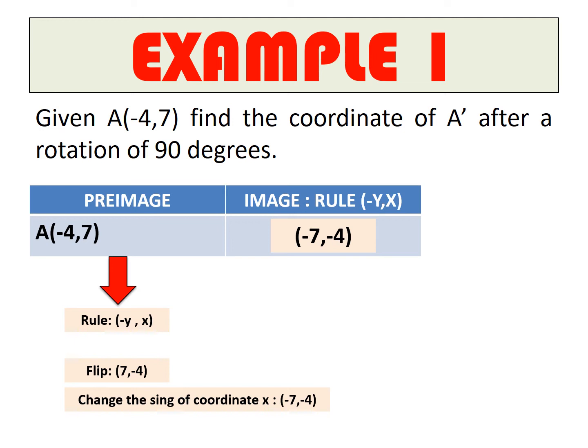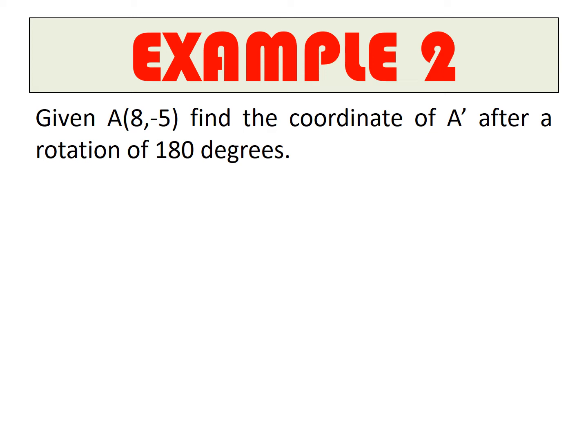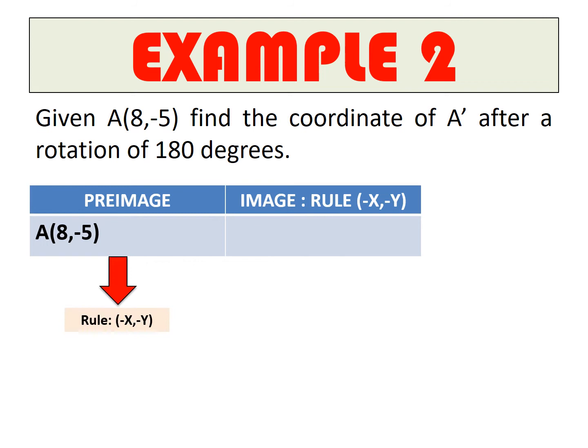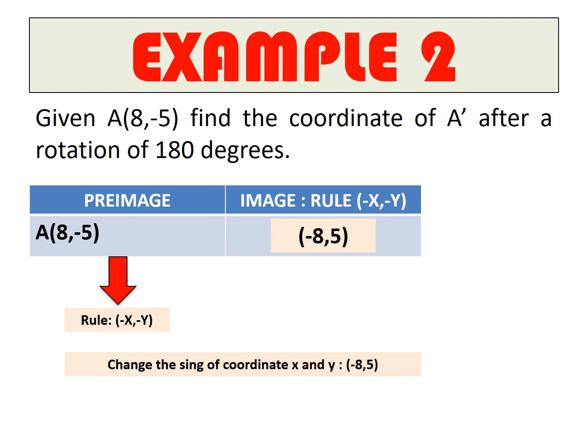Example 2: Given point A at (-8, -5), find the coordinate of A prime after a 180° rotation. Create a table. Remember the rule — you don't flip; you only change the sign of both X and Y coordinates. You have -8 and -5, so when you change the sign of both, it becomes positive 8 and positive 5. The answer is (8, 5).